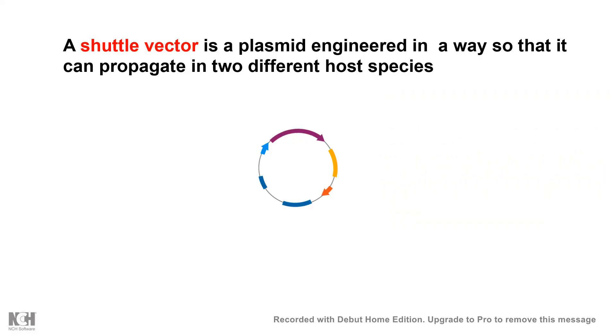Shuttle vectors are simply specially engineered plasmids which are engineered in such a way that they can propagate and segregate in two different host species. Let's say a bacteria and a eukaryotic species yeast.